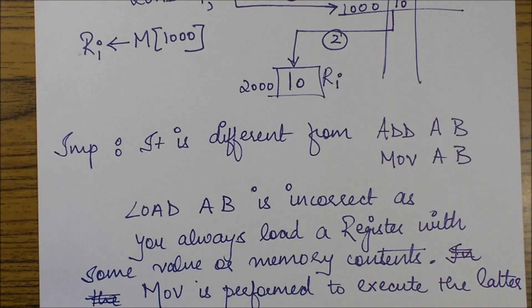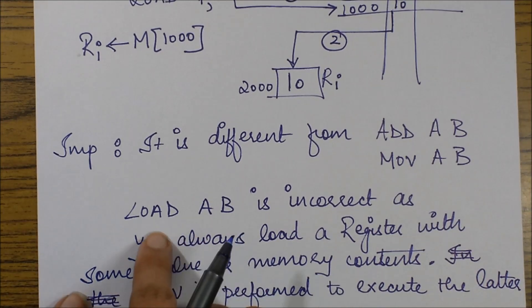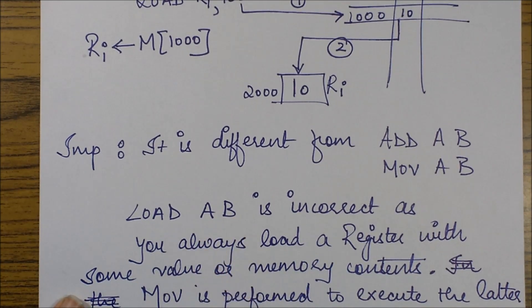So this is the difference, friends. In case you want to load a register with some other register's value, there is no load operation available for it, you need to perform move. So if you are writing this load AB, this is incorrect, move is performed in that case.